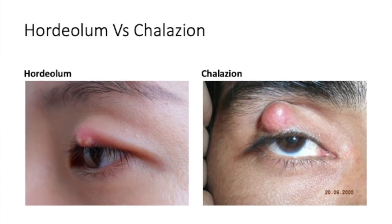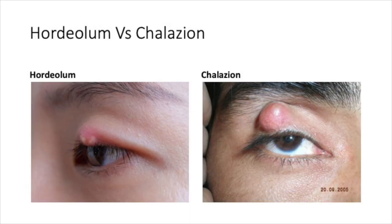Let's look at two other swellings seen around the eyelid: hordeolum and chalazion. An external hordeolum is an acute inflammation of the gland of Zeis or gland of Moll, whereas an internal hordeolum is an acute inflammation of the meibomian glands. Once this acute inflammation subsides, if the meibomian ducts are blocked, it leads to a chronic, hard, non-tender swelling called a chalazion.